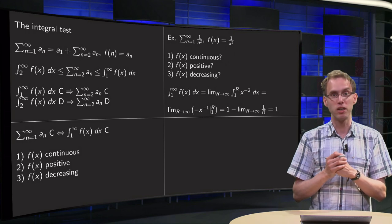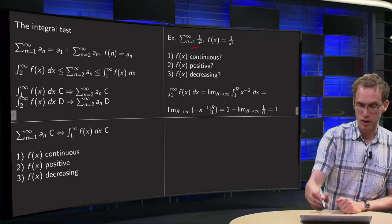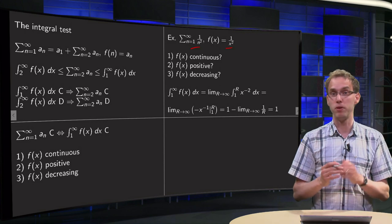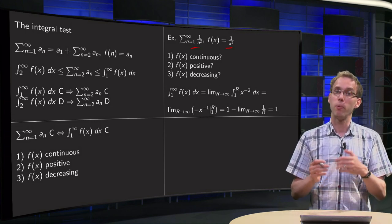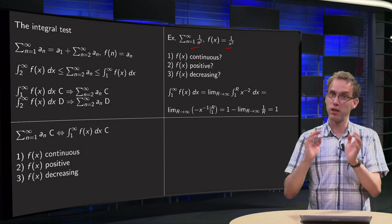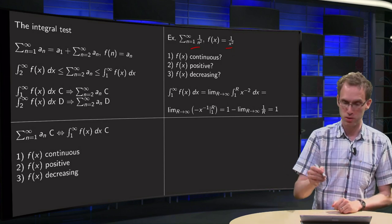Let's apply to an example, that 1 over n squared, so f(x) equals 1 over x squared, between 1 and infinity. Is f(x) continuous? The domain is 1 to infinity, so x is positive, non-zero, so that's okay.